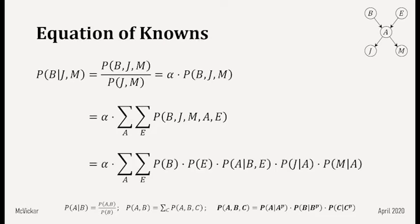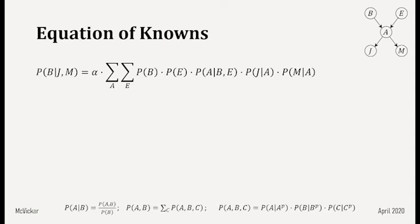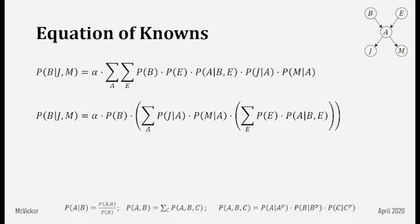This equation is now in terms of things we know, but we can rearrange to simplify the computation. Moving to a new page with the equation at the top: P(B) is not dependent on E or A, so it moves completely outside both sums. P(J|A) and P(M|A) are not dependent on E, so they move outside the sum over E. We store this simplified equation at the bottom.